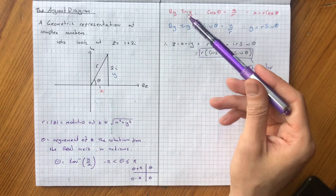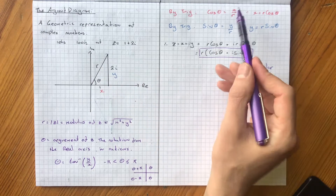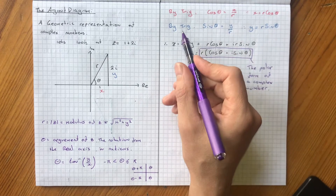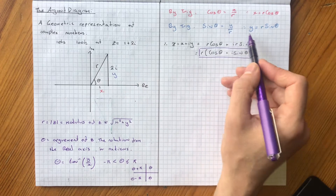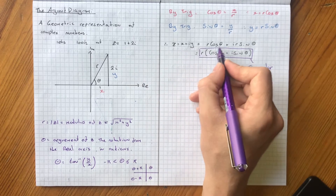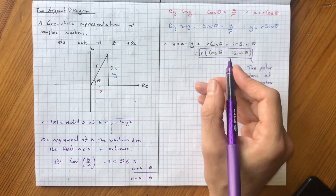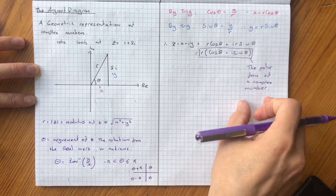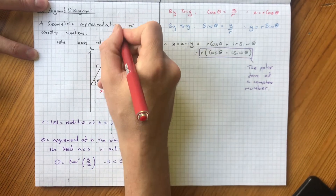By simple trigonometry we can see that cos theta, which is adjacent over hypotenuse, is x over r, which rearranges to x equals r cos theta. And again trigonometry gives us sin theta, which is opposite over hypotenuse, so y over r, giving us y equals r sin theta. This gives us z equal to x plus iy equal to r cos theta plus i r sin theta, or taking out the common factor of r: z equals r bracket cos theta plus i sin theta. This is the polar form of a complex number, as opposed to the Cartesian form.